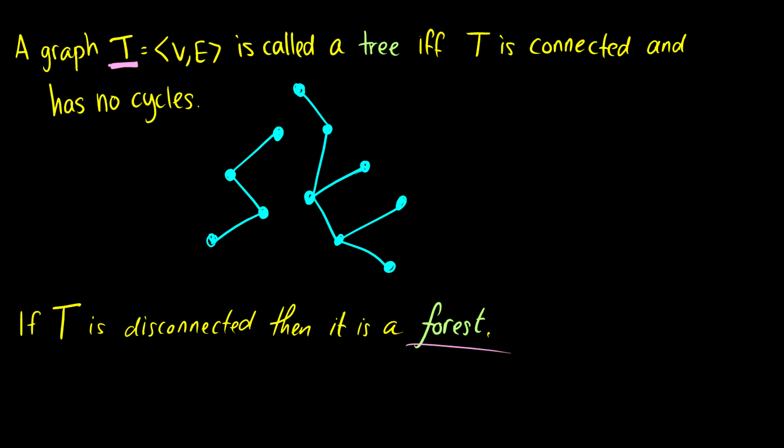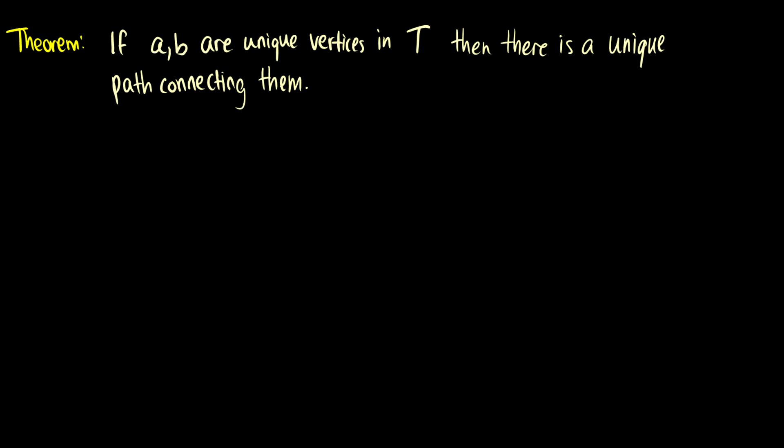So what are some cool properties of trees? Well, if we have two vertices in a tree, then there's going to be a unique path connecting them. So I'll draw a very basic tree here. We'll do a binary tree. So a binary tree always splits into two.